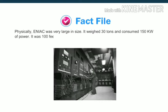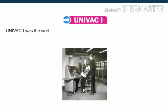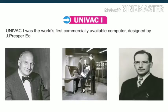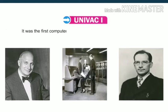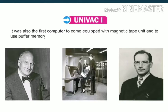UNIVAC — Universal Automatic Computer 1 — was the world's first commercially available computer, designed by J. Presper Eckert and John Mauchly in 1951. It was the first computer to handle both numeric and text data, the first to come equipped with a magnetic tape unit, and the first to use buffer memory.